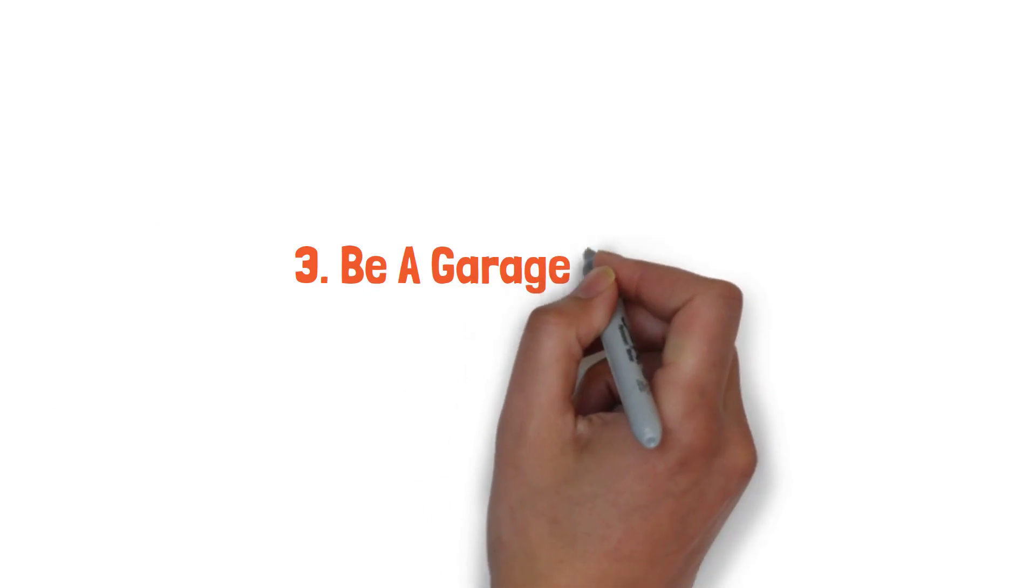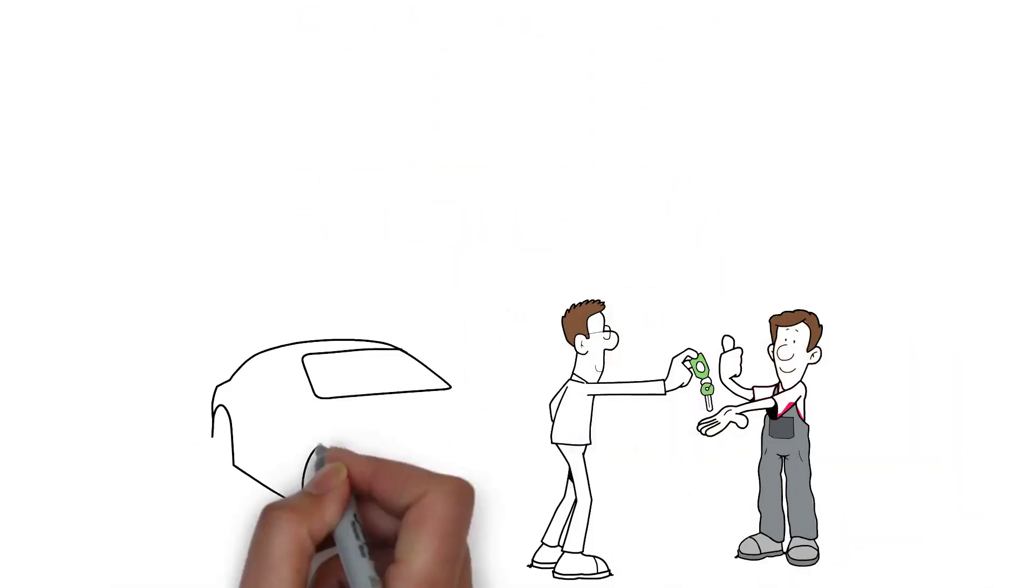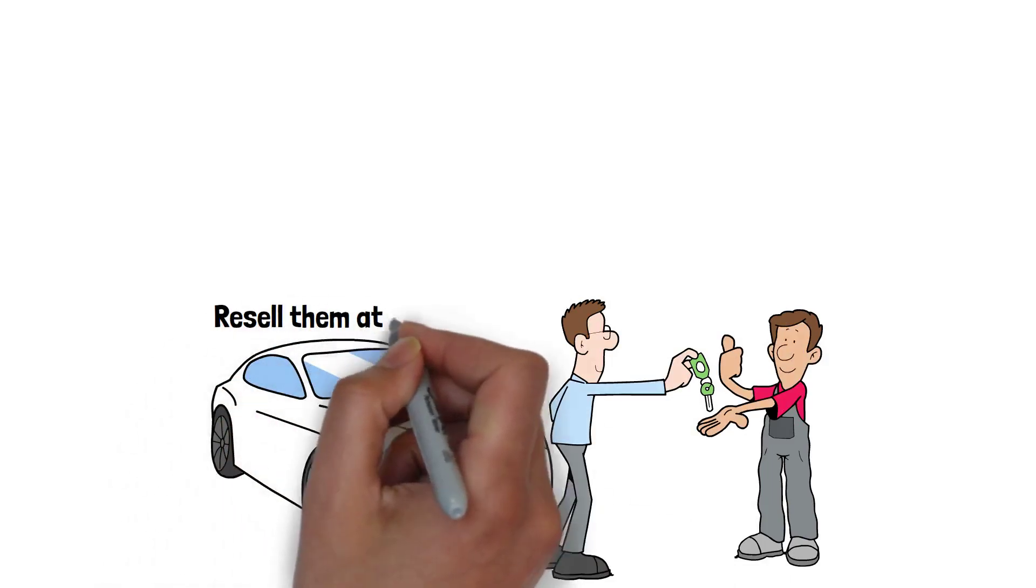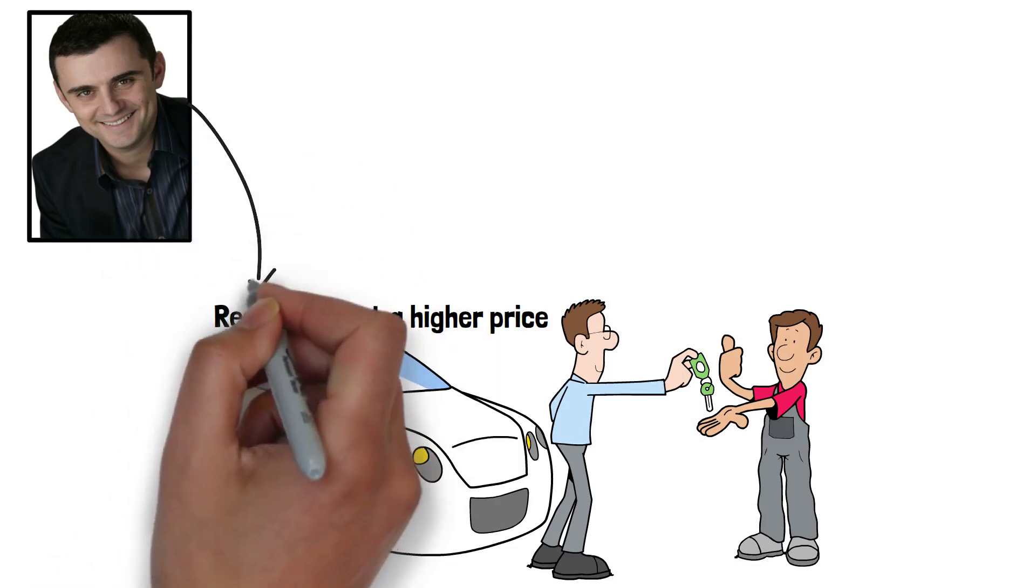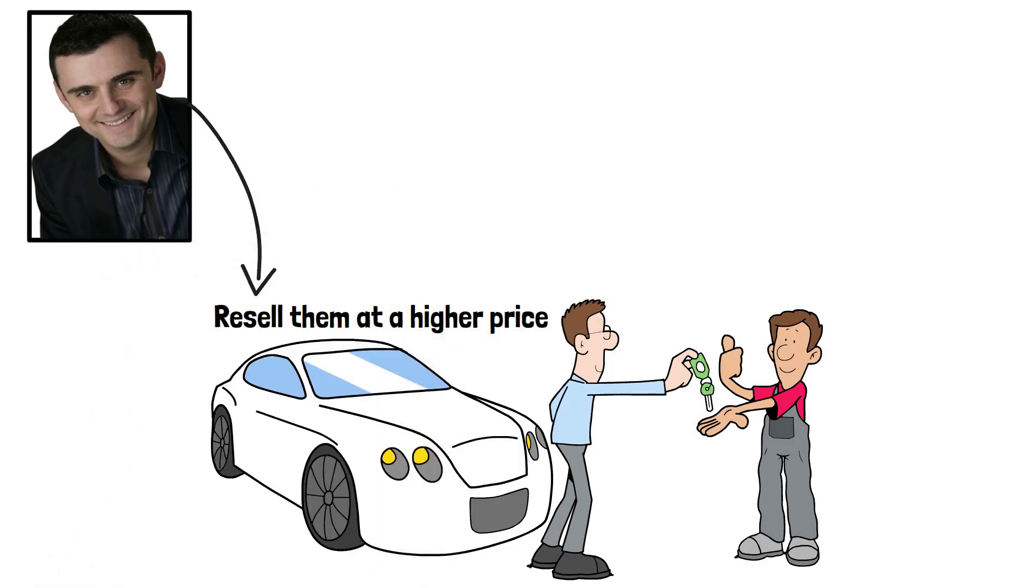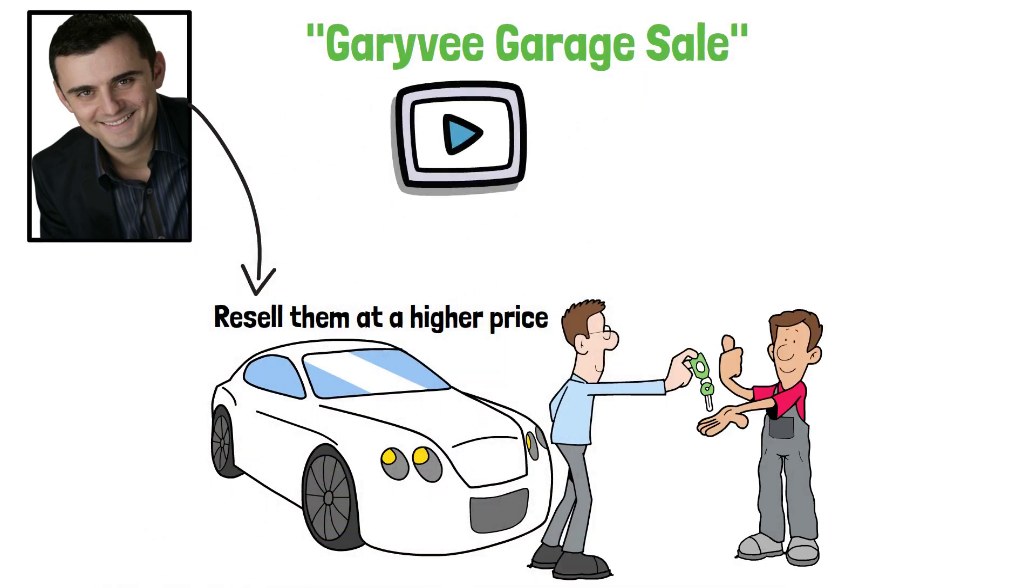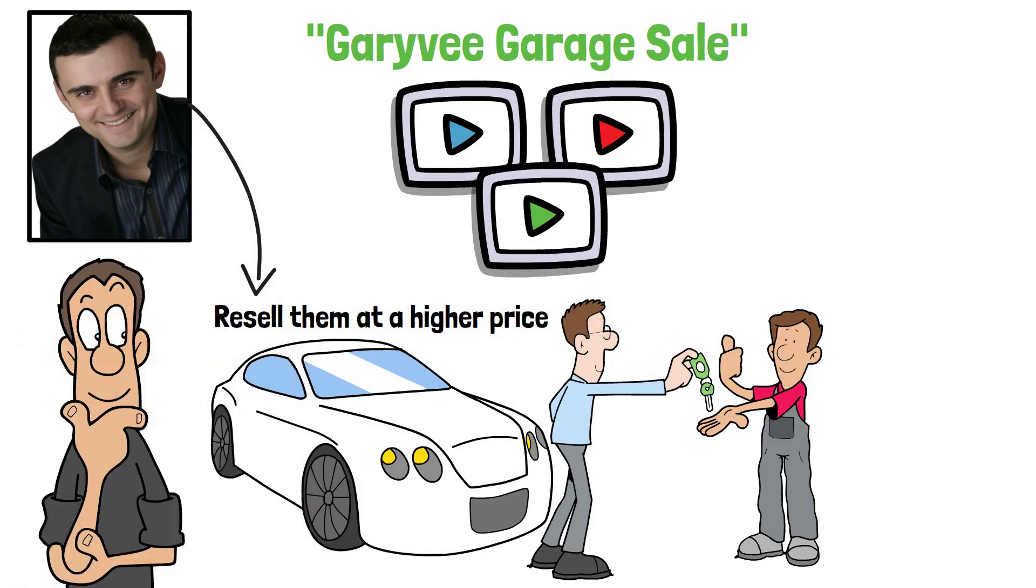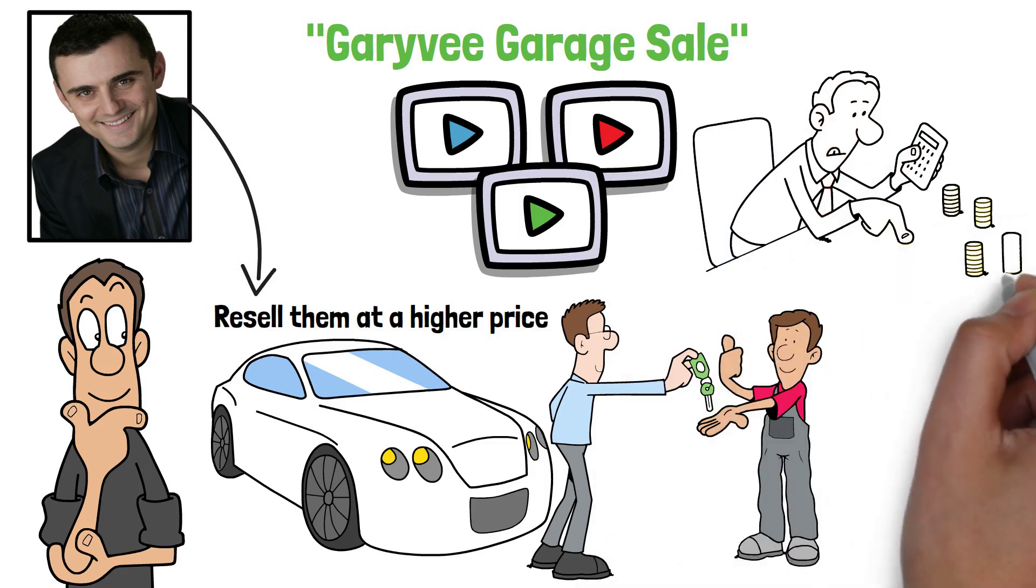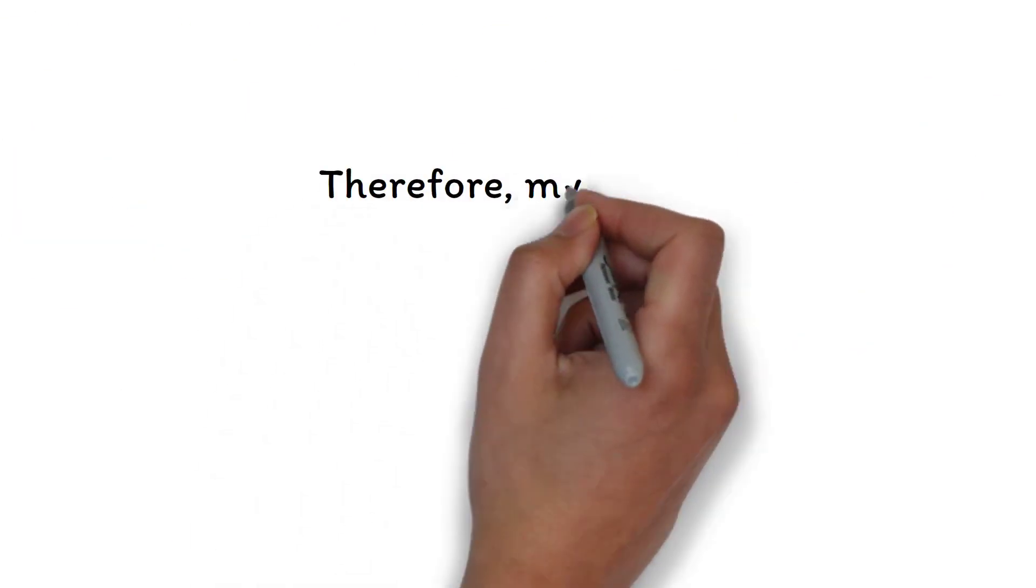Three, be a garage tycoon. The next side hustle is to buy things below their actual value at flea markets or garage sales, for example, and then resell them at a higher price. Do you know Gary V? He did it quite often, and to get a better picture of what I mean, enter the following on YouTube: Gary V Garage Sale, and you will find a few videos of him. Finally, there is nothing more to say about the side hustle, except that it is of course somewhat limited in terms of earnings and growth potential and also takes a lot of time, since you always have to be on site yourself, but can also be very fun.